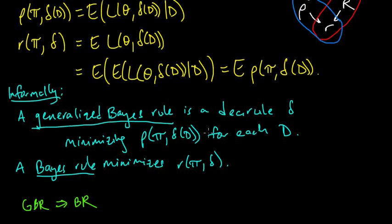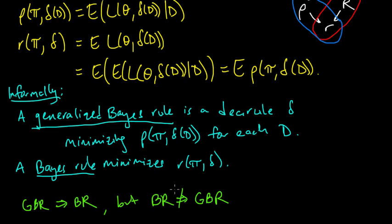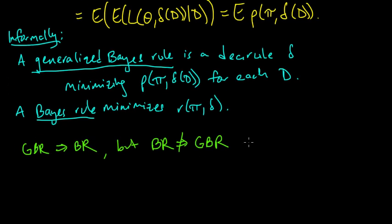But not every Bayes rule is a generalized Bayes rule. One reason is that your prior might put zero probability on some regions, and on those regions, a Bayes rule is essentially arbitrary.